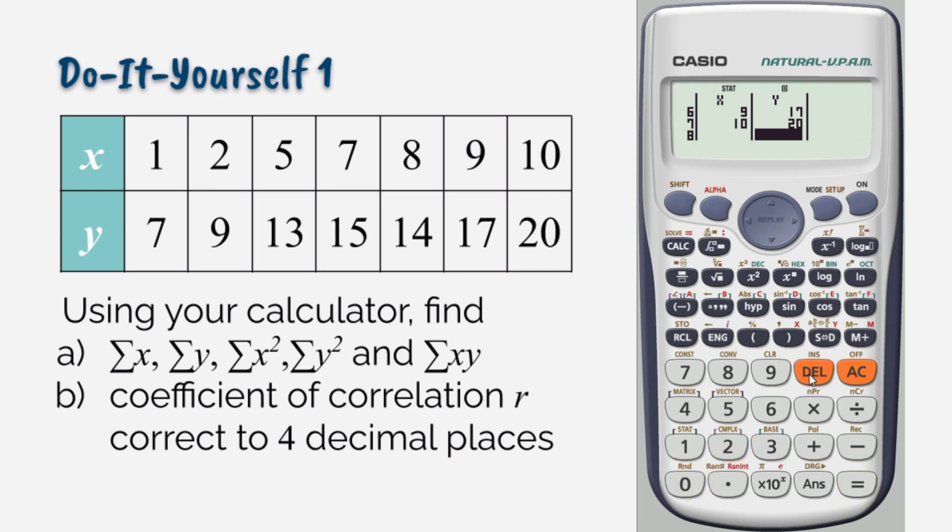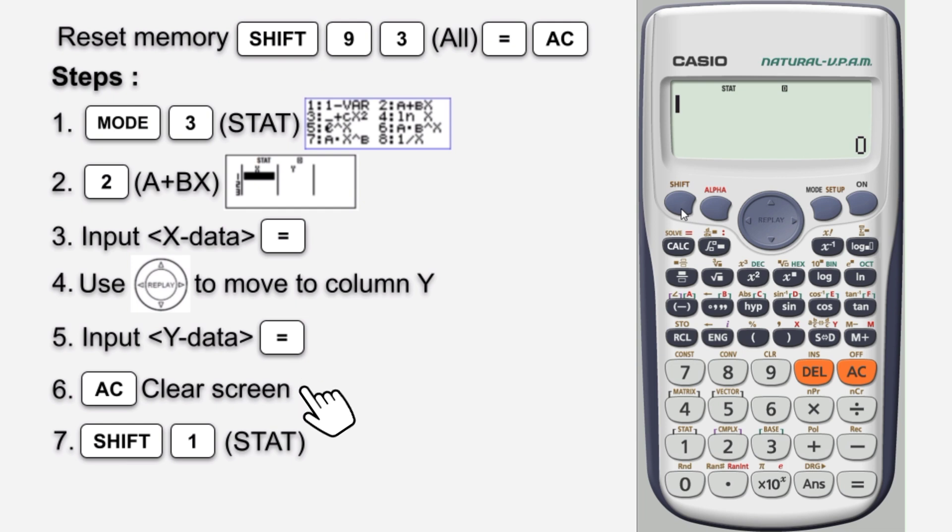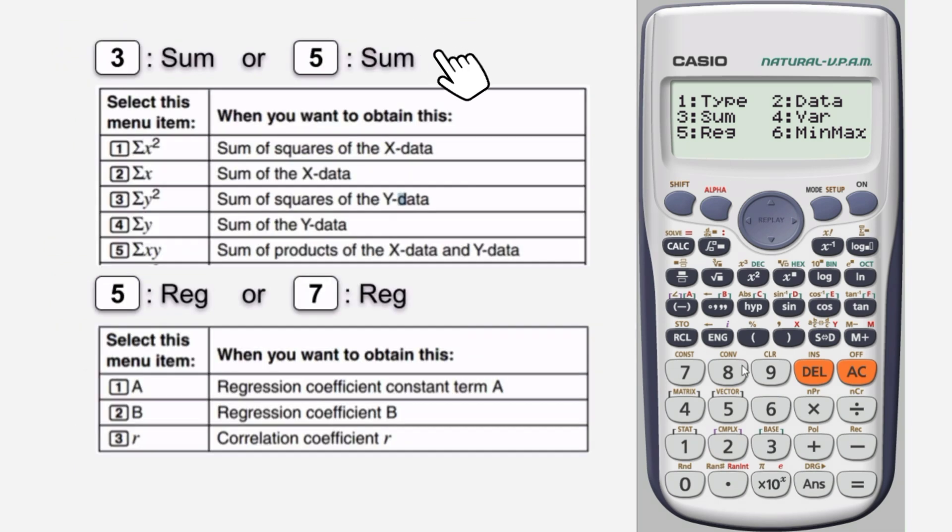Use the delete button if you input the wrong data. Press AC to clear the screen. The most important step: press SHIFT 1. You will see this screen on your calculator. Depending on the variance of your calculator, which key operation you need to press, either 3 or 5 for summation.